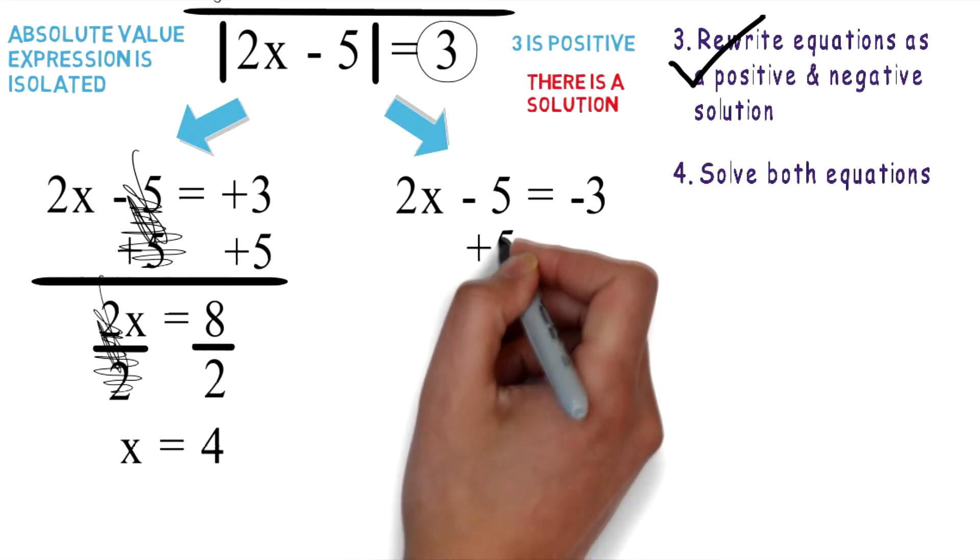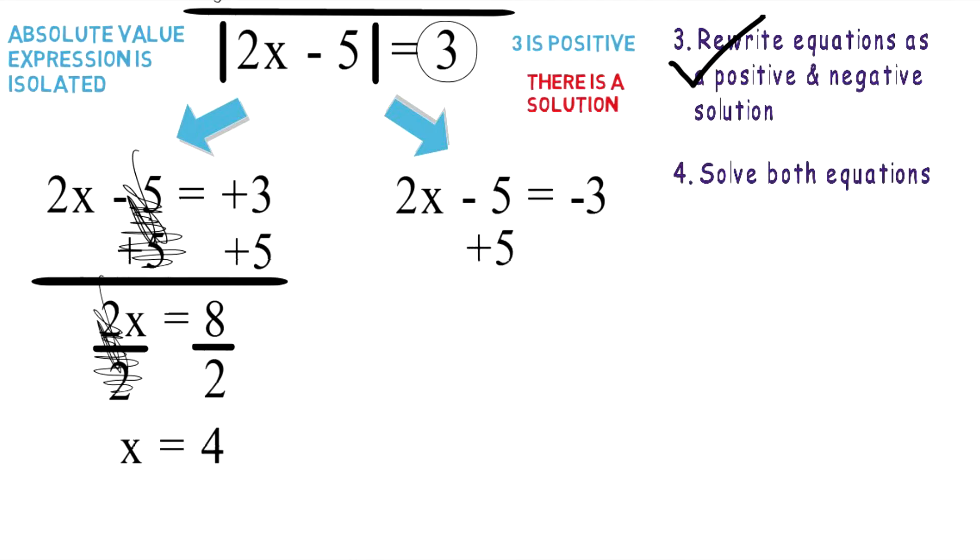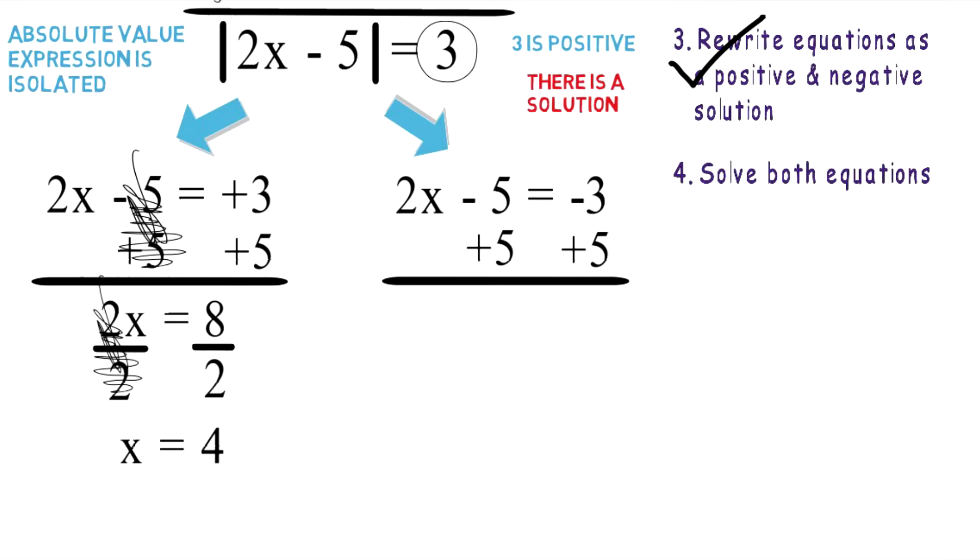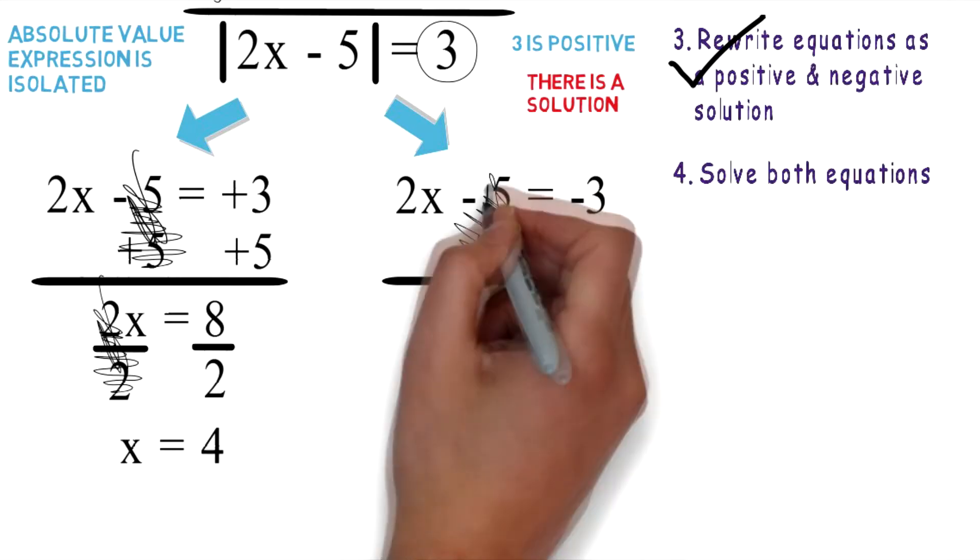Now we have to do the same thing to our other equation. Add five to both sides of the equation. Positive five and negative five cancel each other out.